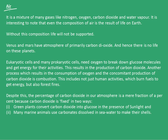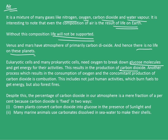Our focus in this chapter is on the abiotic components — air, water, and soil. Air is a mixture of many gases like nitrogen, oxygen, carbon dioxide, and water vapor. It is interesting that even the composition of air is the result of life on Earth. Without this composition, life would not be supported, as in the case of Venus and Mars, which have atmospheres of primarily carbon dioxide and hence no life. Eukaryotic cells and many prokaryotic cells need oxygen to break down glucose and get energy, producing carbon dioxide. Combustion also consumes oxygen and produces CO2, including human activities and forest fires.